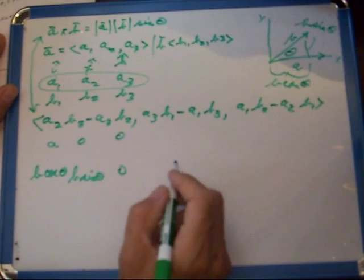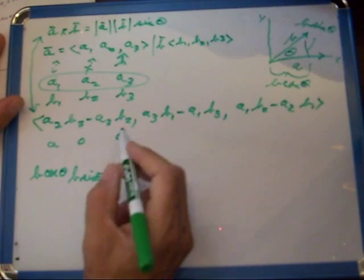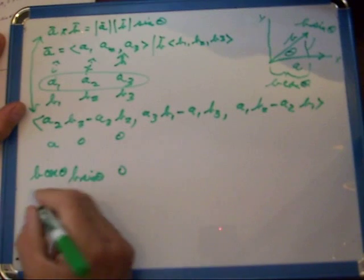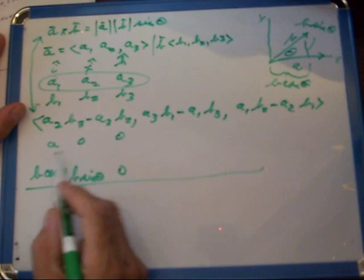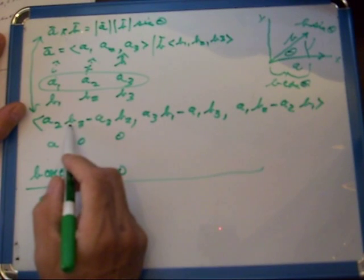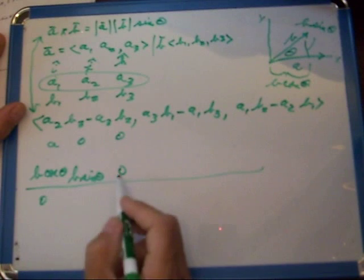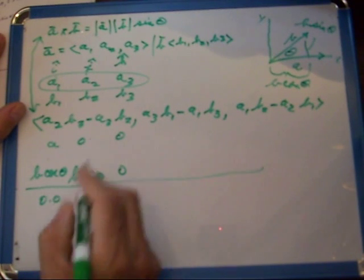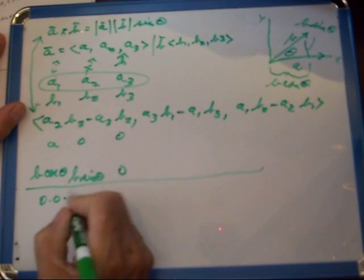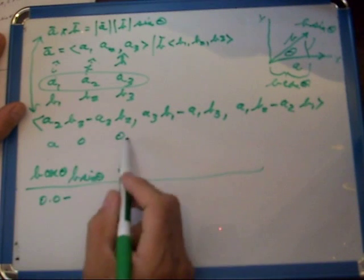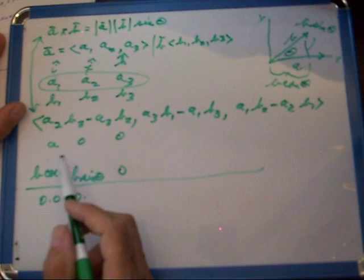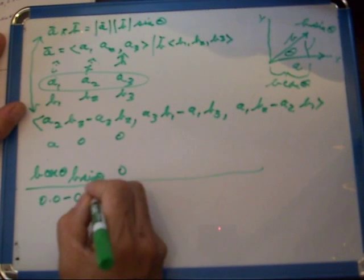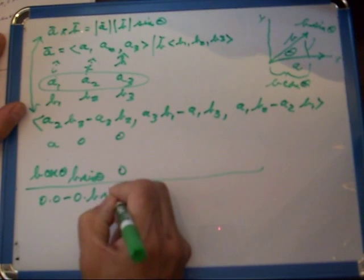At this point you're probably way ahead of me, but at any rate, let me just do it the teachable way. And we've got A2, which is zero, times B3, which is zero, minus A3, which is zero, times B2, which is B sin theta.